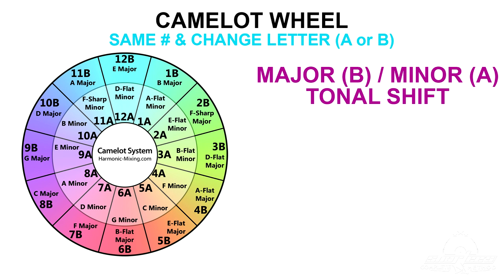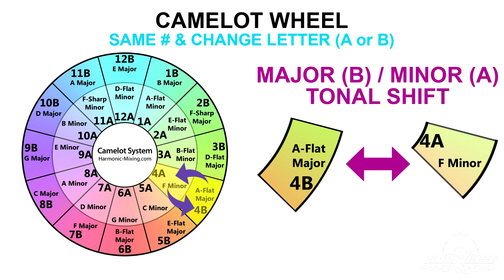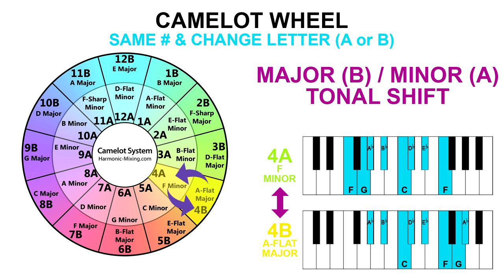Another cool technique you can do is to create a major-to-minor tonal change, or vice versa. You can do this by keeping the keys of your songs on the same number and only changing the letter. Your mix will be compatible harmonically because you're mixing songs whose keys are relative to each other, meaning they share all the same notes in their scales — the position of the notes are just shifted within their respective scales. So for example, 4A can mix into 4B and 4B can mix into 4A. This works well because 4A, otherwise known as F minor, is the relative minor of 4B, otherwise known as A-flat major.